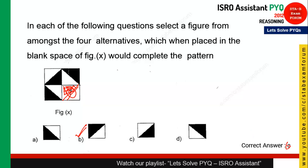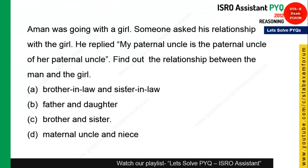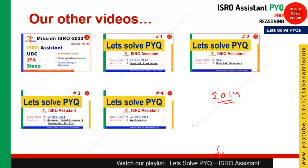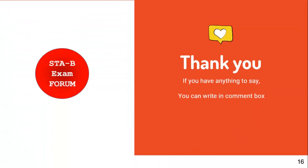The last question is from blood relations and is given as homework — solve it and write your answer in the comment box. We have also solved ISRO Assistant previous year questions for 2014, available in our playlist called 'Let's Solve PYQ ISRO Assistant'. That's all for the reasoning section — thank you for watching and have a nice day.